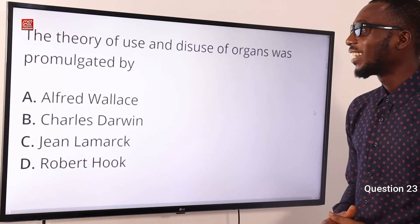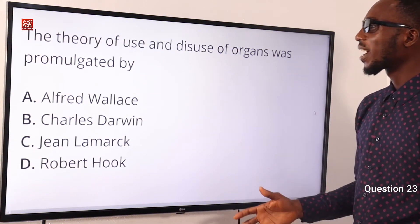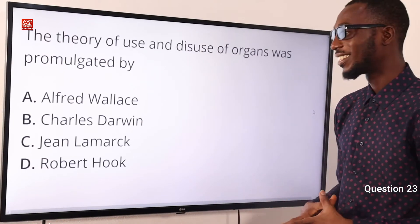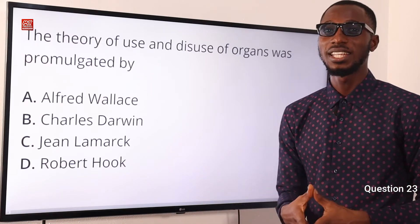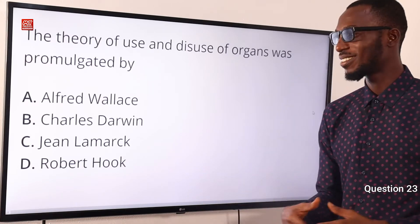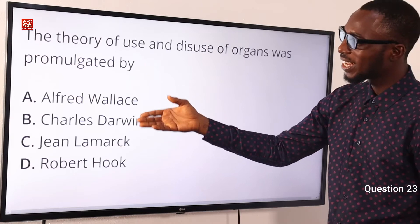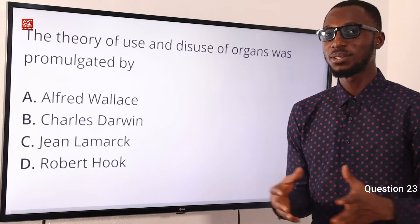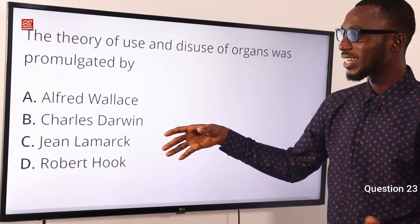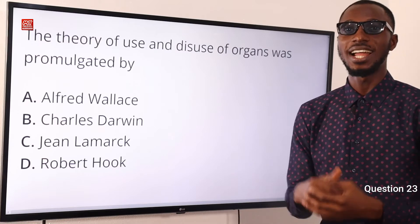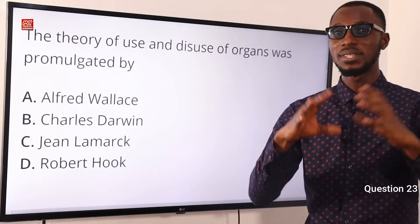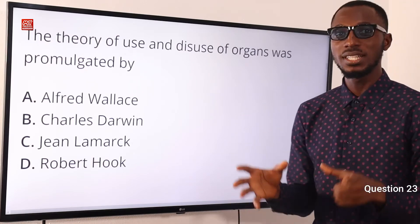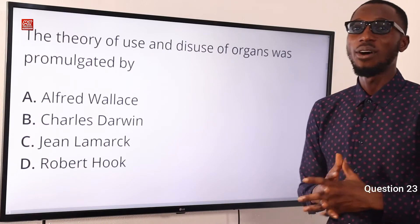Question 23. The theory of use and disuse of organs was promulgated by whom? This was done by Jean Lamarck, who put forward the inheritance of acquired traits. Alfred Wallace and Charles Darwin co-developed the theory of natural selection. Robert Hooke is associated with cell theory. So the theory of use and disuse of organs was promulgated by Jean Lamarck — option C.